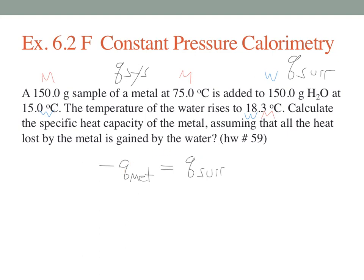If we keep the negative sign in there and we put all of the metal data in. 150 grams of metal, the specific heat we don't know, there's our unknown, the temperature change is the final minus initial, 18.3 degrees minus it starts out at 75.